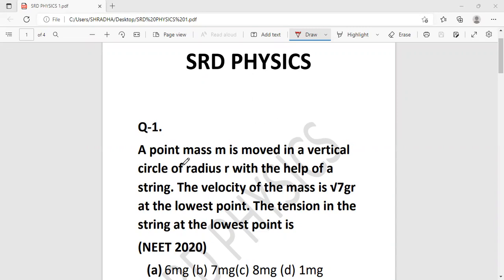The question is: A point mass M is moved in a vertical circle of radius R with the help of a string. The velocity of the mass is √(7gr) at the lowest point. The tension in the string at the lowest point is...